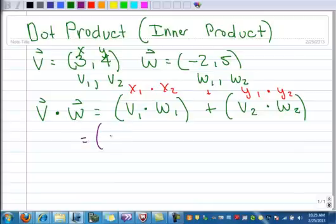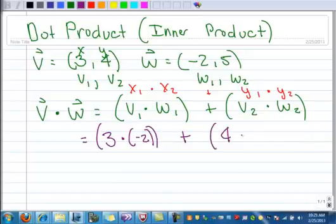So then we have here 3 times negative 2, and then the y parts are going to be 4 times 5. So 3 times negative 2 is negative 6. 4 times 5 is 20, and we add those together, and we get 14. That is the dot product.